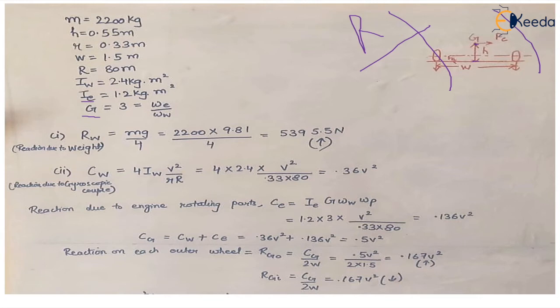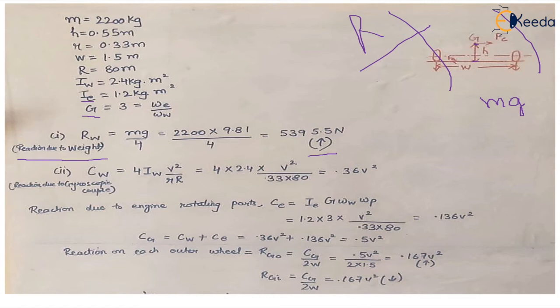The first component to calculate is the reaction due to weight. The total weight is mg, so the weight per wheel is mg/4, and the upward reaction magnitude is the same. The mass is 2200 kg.